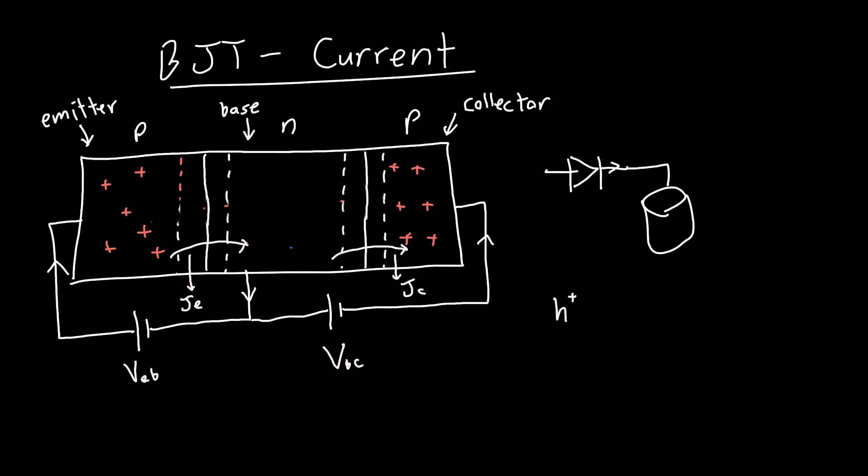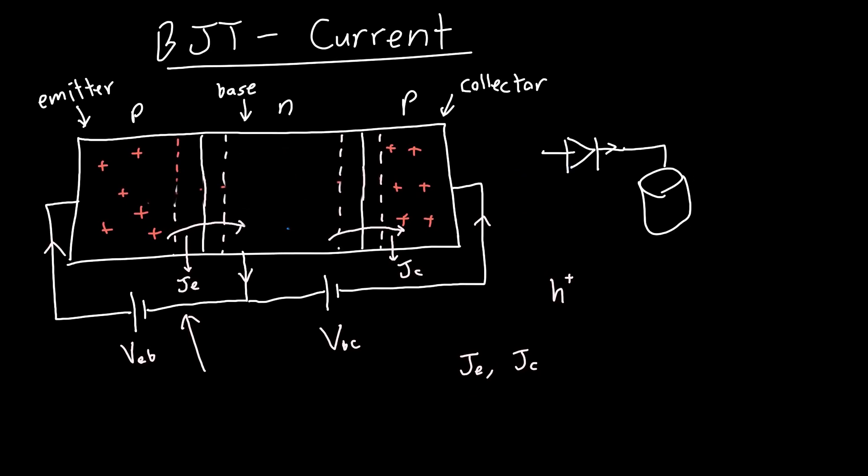How do we figure out what these currents are? We're trying to find JE and JC because these will tell us how our BJT responds to an applied voltage. Now you might say, isn't this on the left-hand side just a diode? Can't we just treat this whole thing like a diode? And yeah, you totally could. We know what the current in a diode looks like.